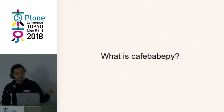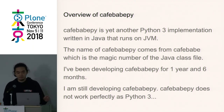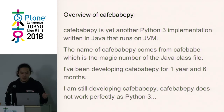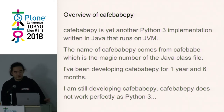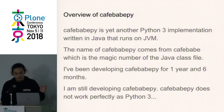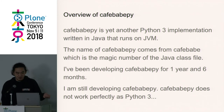What is CalfBaPy? CalfBaPy is yet another Python 3 implementation written in Java that runs on the JVM. The name CalfBaPy comes from CAFEBABE, which is the magic number of the Java class file. I've been developing CalfBaPy for one year and six months — the same period as I studied Python. I am still developing CalfBaPy. CalfBaPy does not work perfectly as Python 3 and cannot import almost all modules yet. I will do my best from now.